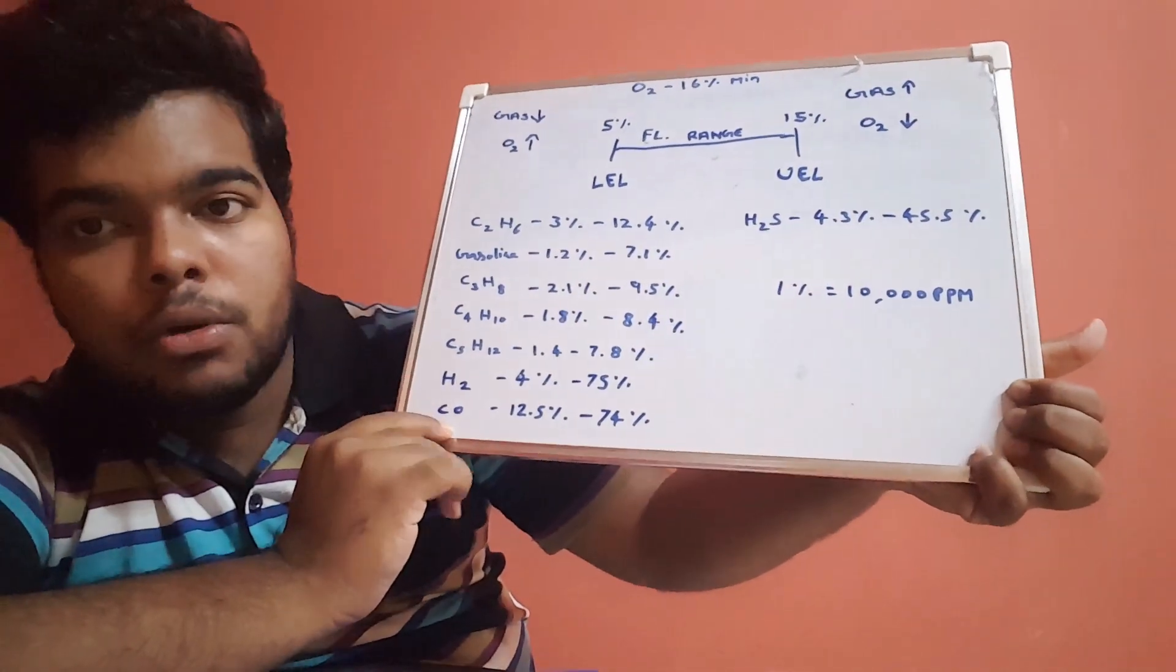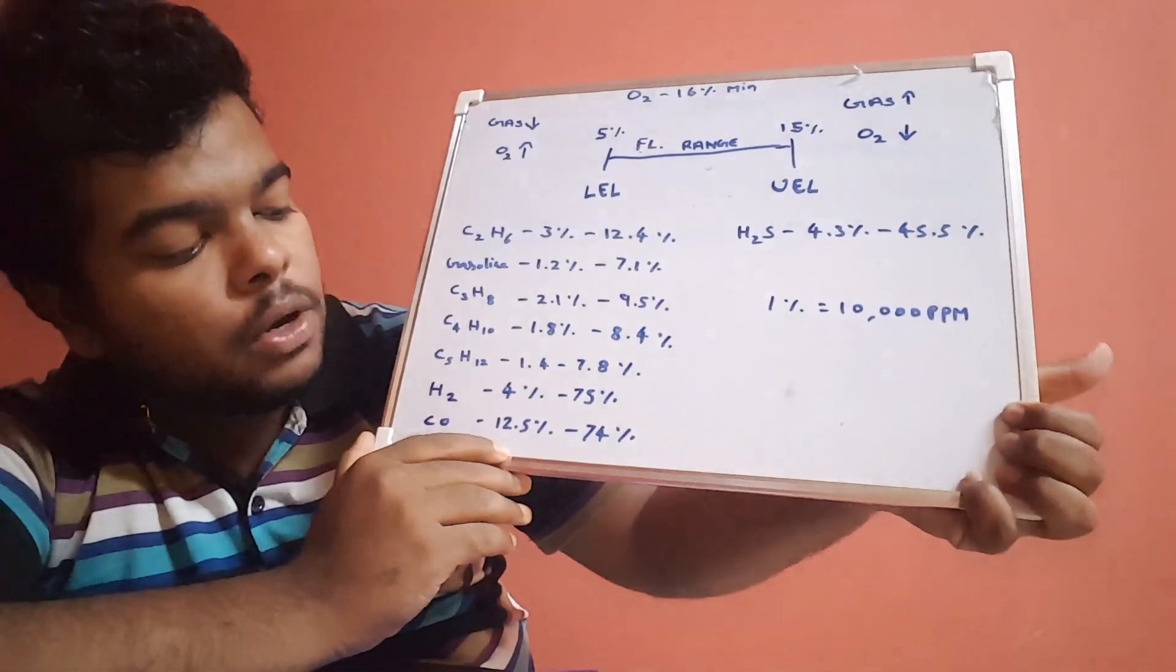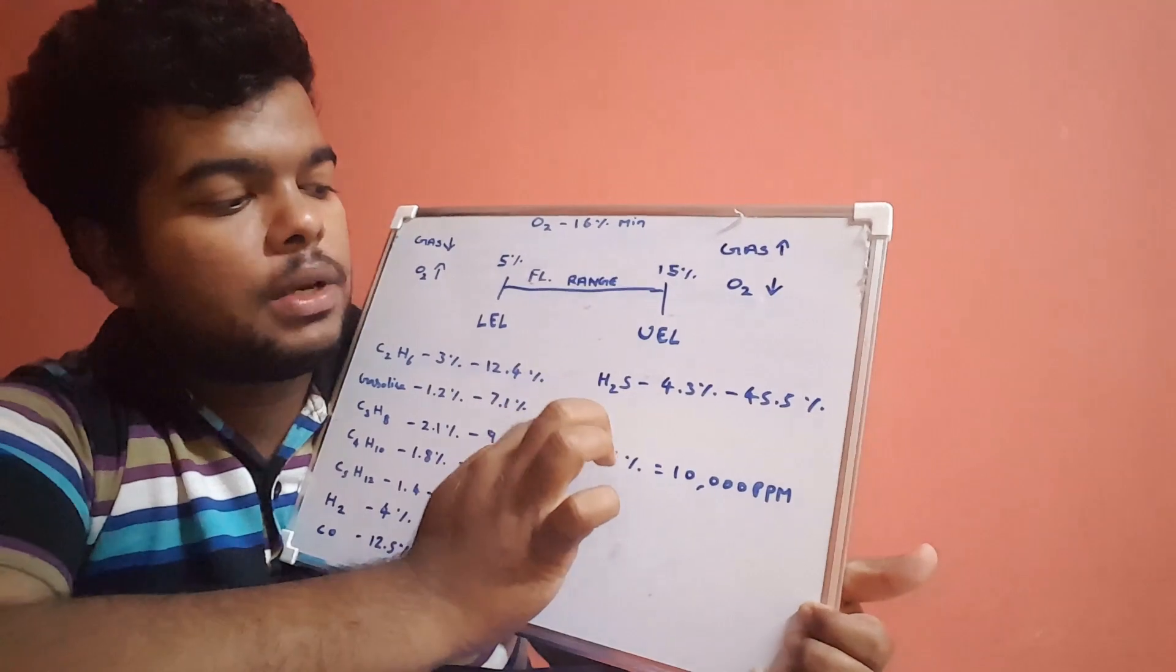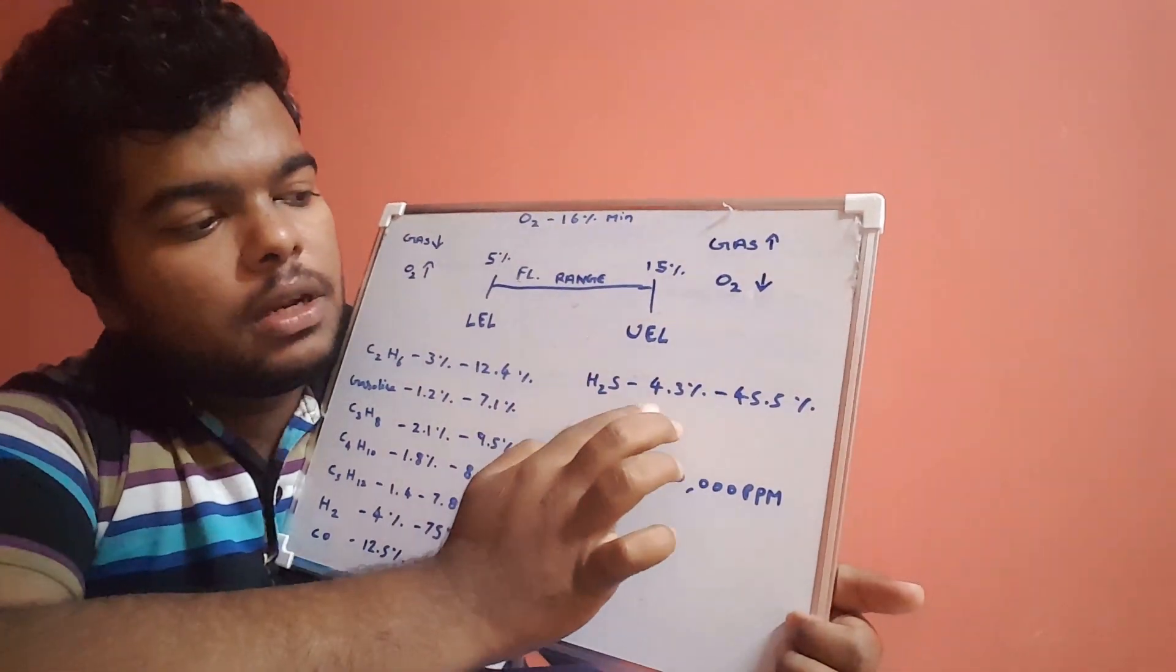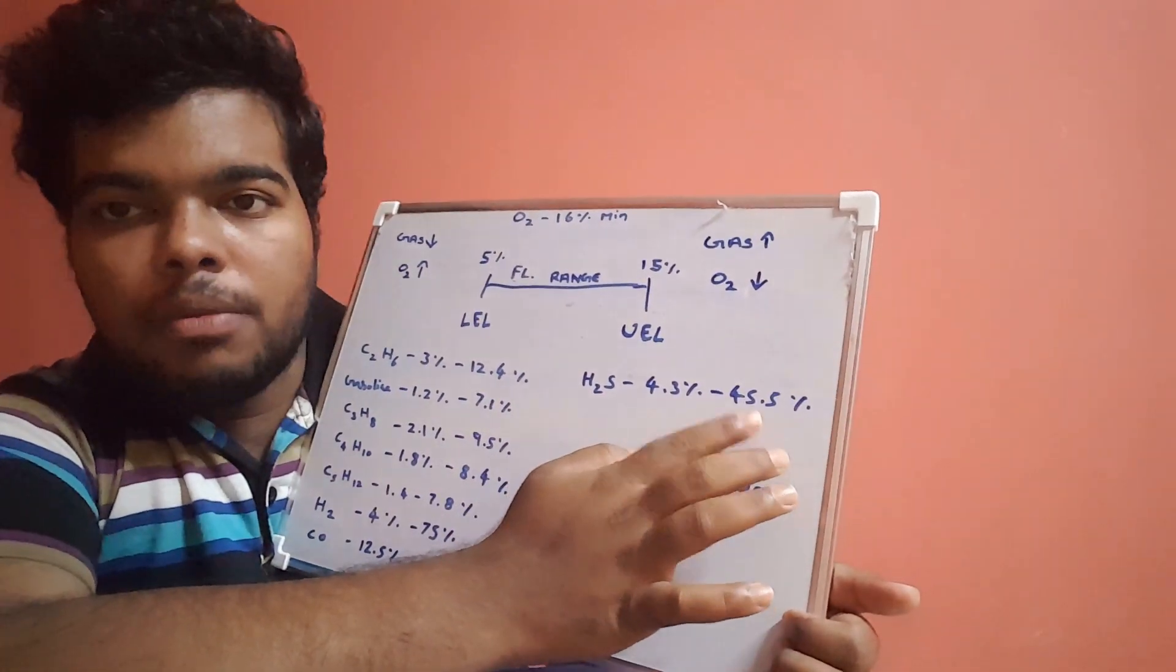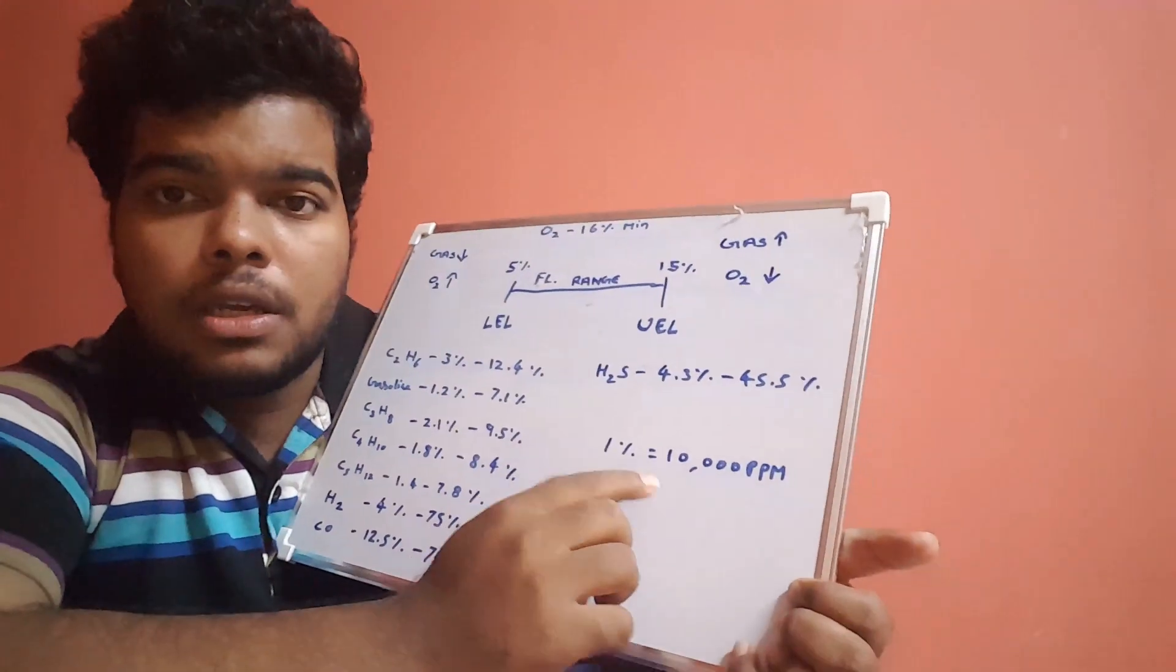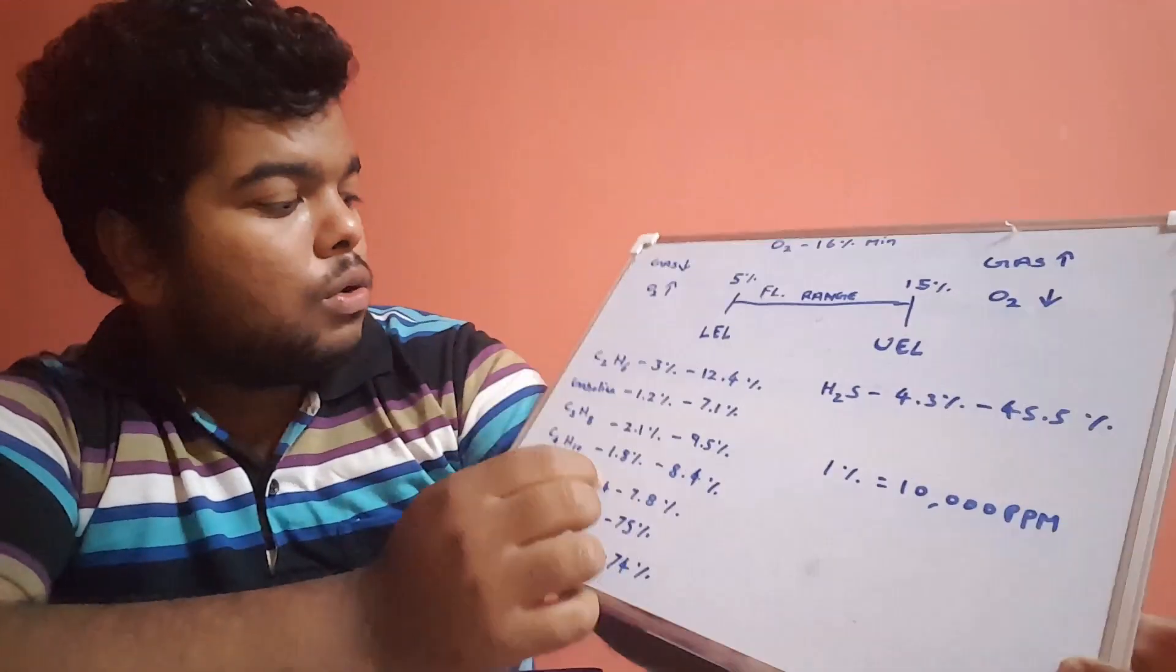CO is carbon monoxide, which has 12.5 percentage to 74 percentage. H2S is 4.3 percentage to 45.5 percentage of LEL and UEL.